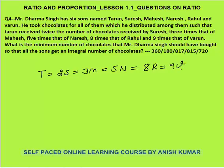Each person must receive an integral number of chocolates, so assume all equal to K. Then S = K/2, M = K/3, N = K/5, R = K/8, V = K/9 — K must be divisible by 2, 3, 5, 8, and 9. The LCM of 2, 3, 5, 8, 9 is 360. So assume K = 360x. Then T = 360x, S = 180x, M = 120x, N = 72x, R = 45x, V = 40x.